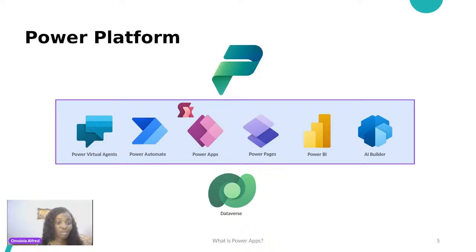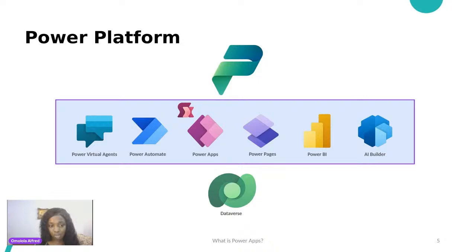When you want to do more complex things, you can integrate another child of the Power Platform: Power Automate. You might be wondering what Power Automate does. Think of 'power' as the family name and the second name as the first name. So Power Automate is used for automating data — anytime you are typing your information inside a form, what you are putting inside that form is data.